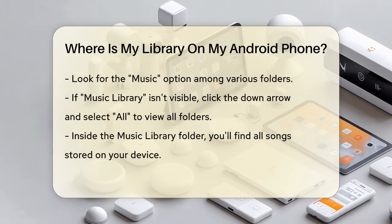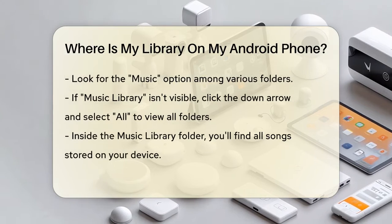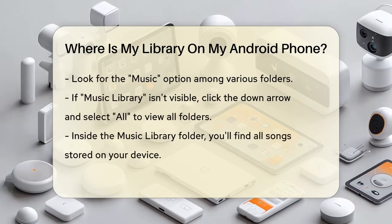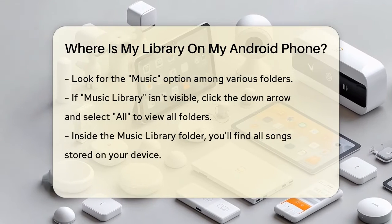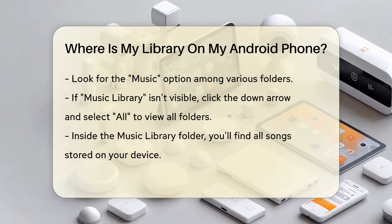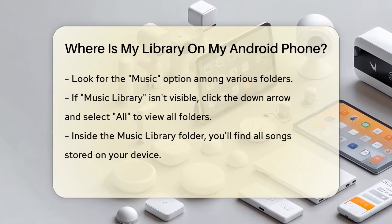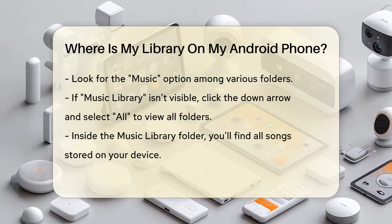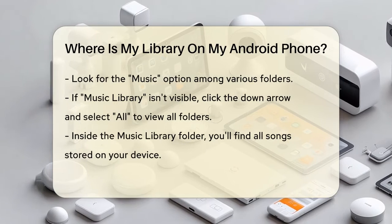If you don't see the music library immediately, click the down arrow and choose All to view all folders, including the Music Library folder. Inside the Music Library folder, you'll find all the songs stored on your phone, provided you haven't accidentally deleted any music. This is where all your transferred and downloaded songs are organized.